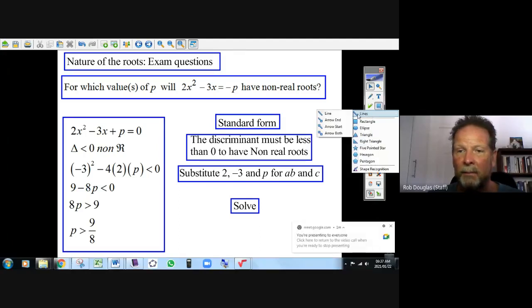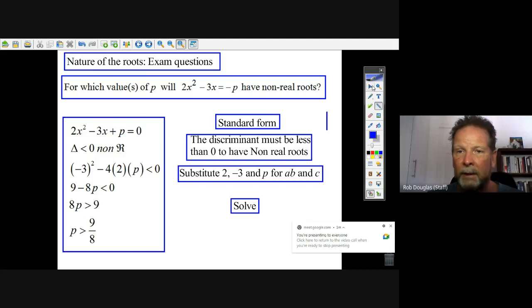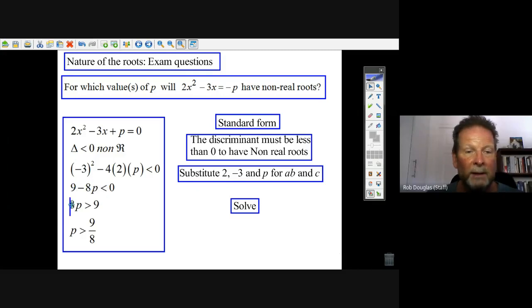I just want to stop there for a second because I want to make sure you see that. If I move the 8p to this side, I have 8p is greater than 9. You see where it's open? So I want to rewrite this thing because it's just nice to have the variables on the left. I write 8p is open greater than 9. So if I added 8p to both sides, see how it's open? It's greater than. So 8p is greater than 9.